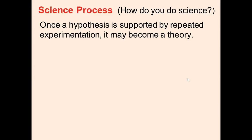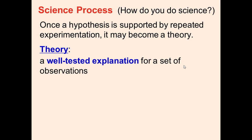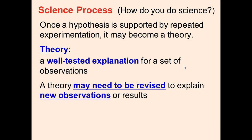Once a hypothesis is supported by experimentation, then it can become a theory. It's always important in science for the data to be replicable. That means that other scientists can also perform the experiment the same as you do, so they know they can trust you and know that you're not fudging the results. A theory is a well-tested explanation for a set of observations. A theory may need to be revised once you find new observations or perform new experiments.